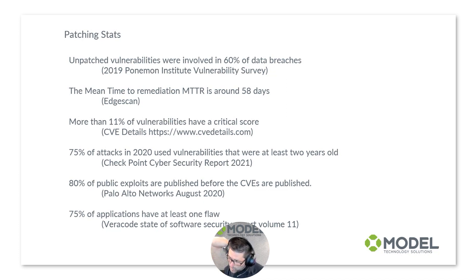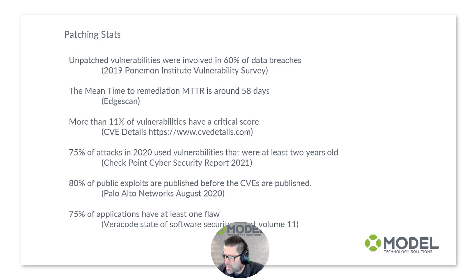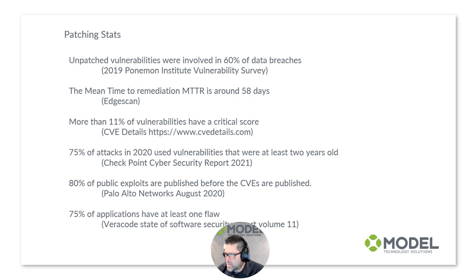Remediation time varies by industry. Public administrators had an MTTR of 92 days, whereas healthcare organizations had an MTTR of just 44 days. The data shows that smaller organizations tend to recover more quickly. According to CVE Details, out of roughly 176,000 vulnerabilities, more than 19,000 had a CVSS score of 9.0 to 10.0 — meaning 11% of vulnerabilities have a critical score.